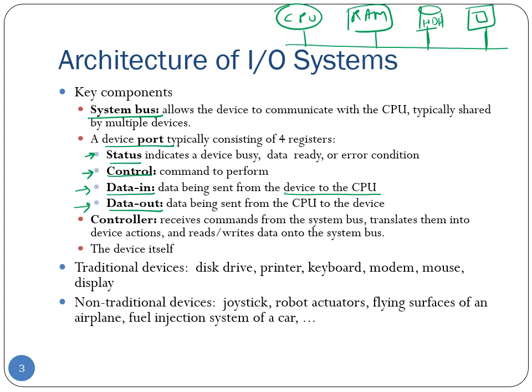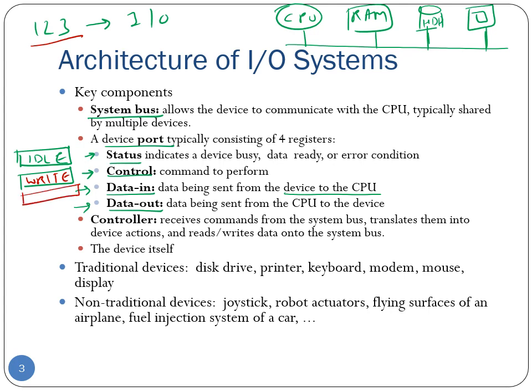Let's say the CPU wants to write the number 123 inside an I/O device. The CPU will first check the status register — let's say the current status is idle. Therefore the CPU will proceed to write the command into the control register, which in this case is 'write.' Since the CPU is not reading anything, the data-in register is not used, but for the data-out register we will write the number 123 that we want to write inside the I/O device.